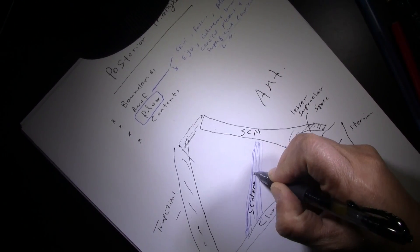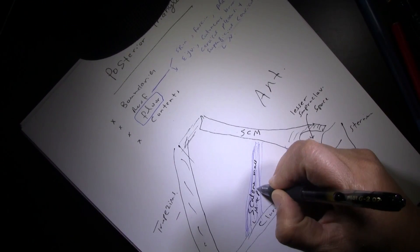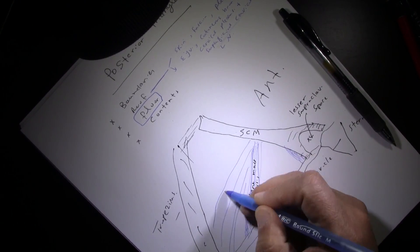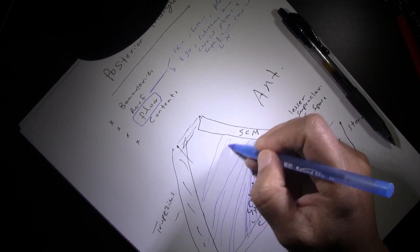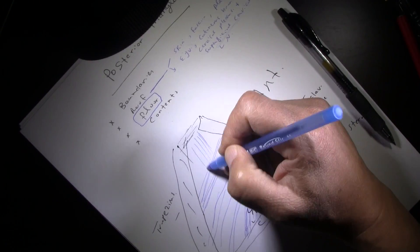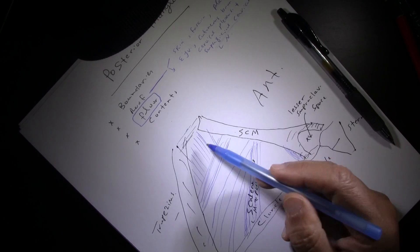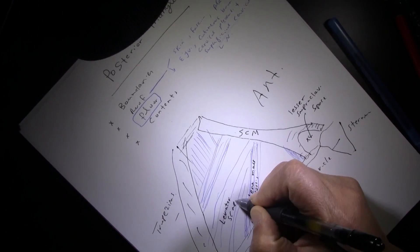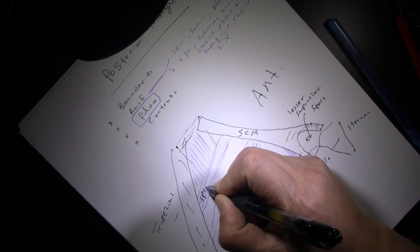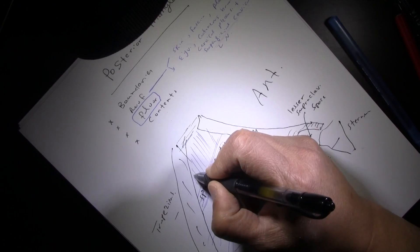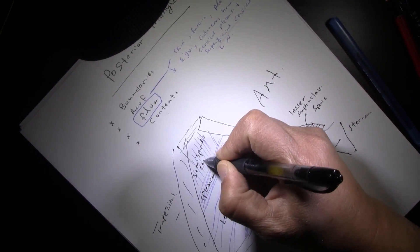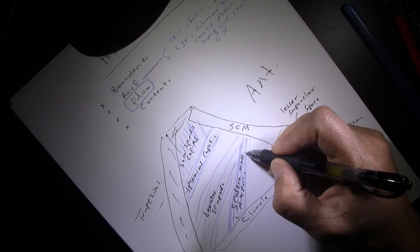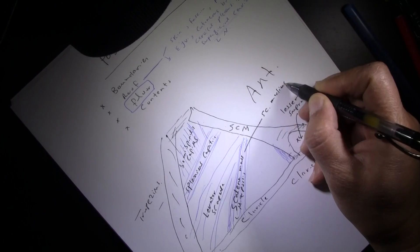The scaleni mass is made by the medius and posterior scalene muscles. Then you will see levator scapulae muscle, splenius capitis, and semispinalis capitis. So in total there are four muscles in the floor: levator scapulae, splenius capitis, semispinalis capitis, and the scaleni mass (scalenius medius and posterior).